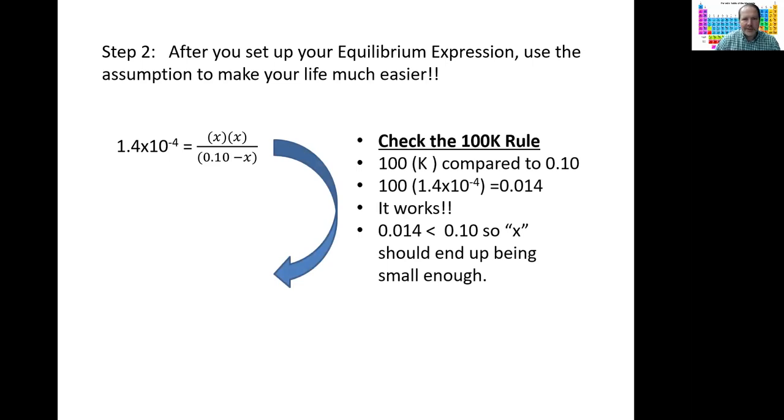100 times the equilibrium constant, 1.4 times 10⁻⁴, gives you 0.014. That's less than the 0.10, so we can drop it.